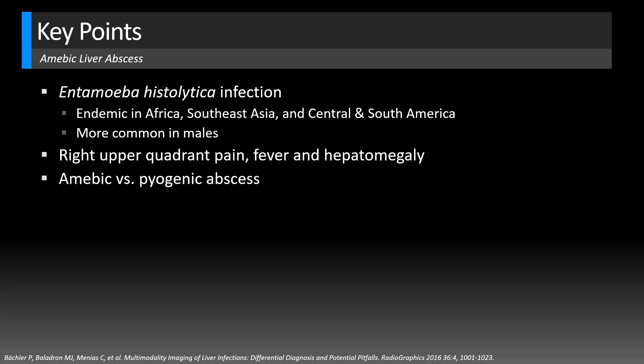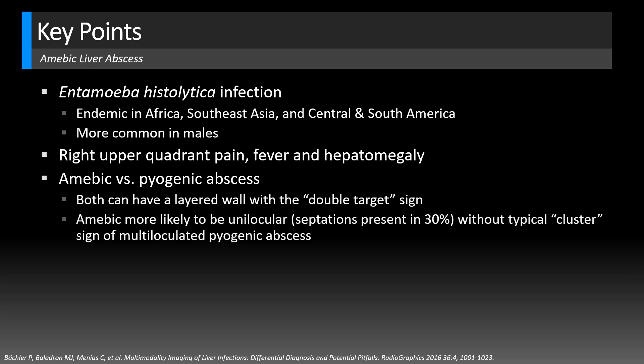It can be difficult to differentiate amoebic from pyogenic or bacterial abscess because both can have the layered wall appearance — the double target or double rim sign. However, amoebic abscesses are more likely unilocular; septations are only present in about a third of cases. You also don't tend to see the cluster sign typical of multi-loculated pyogenic abscess — where a big collection has many tiny pockets rather than just a few ill-defined ones. The amoebic abscess is also more likely to be solitary, whereas pyogenic and fungal abscesses are more likely to be multiple.